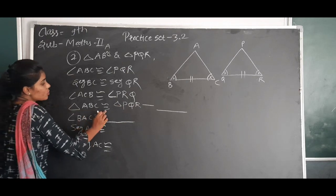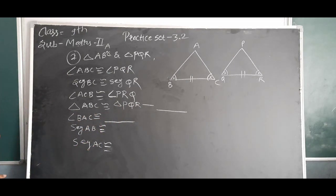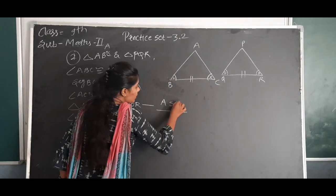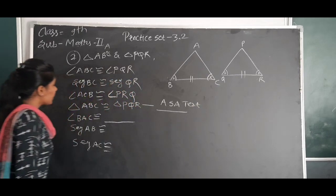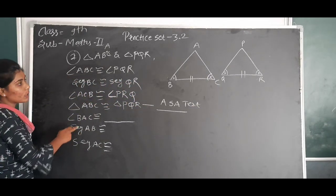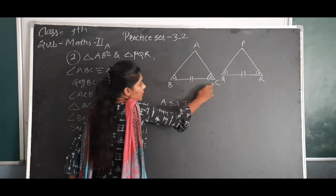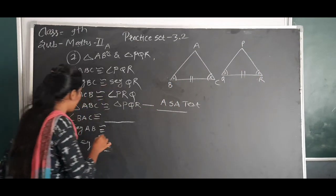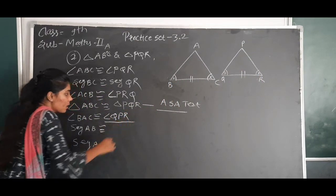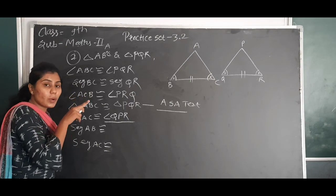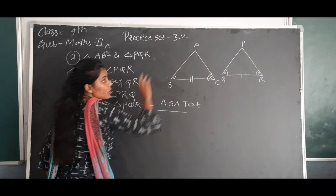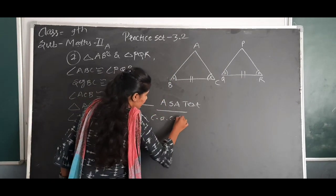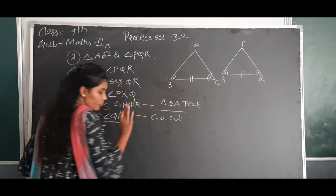So triangle ABC is congruent to triangle PQR. Two angles and one side, meaning by ASA test. The remaining part: angle BAC is congruent to angle QPR, by corresponding angles of congruent triangles (CATCT).